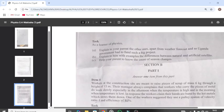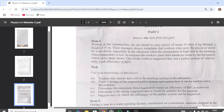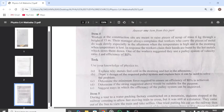Section B, Part 1. Workers at a construction site are made to raise pieces of scrap of mass 6 kg through a height of 15 meters. The manager always complains that workers who carry these pieces of metals do slowly, especially in the afternoon when the temperature is high and in the morning when the temperature is low. In response, the workers claim their hands are burnt by the hot metals which slow them down. One of the workers suggested they use a pulley system of a velocity ratio for an efficiency of 80 percent.